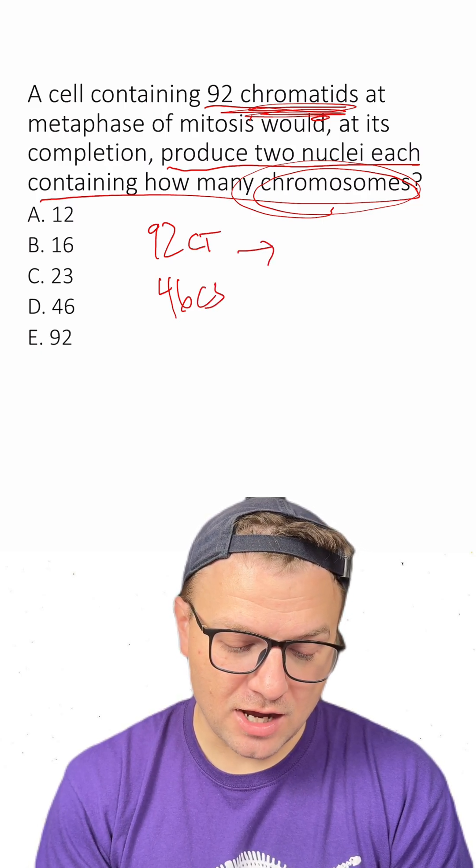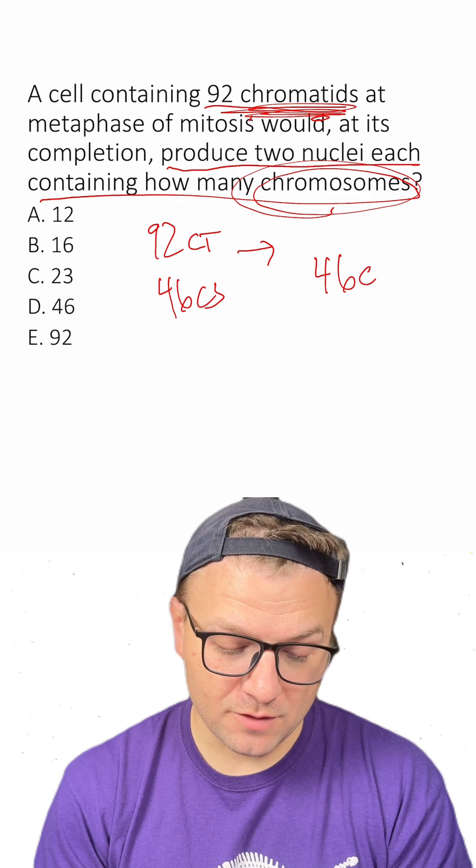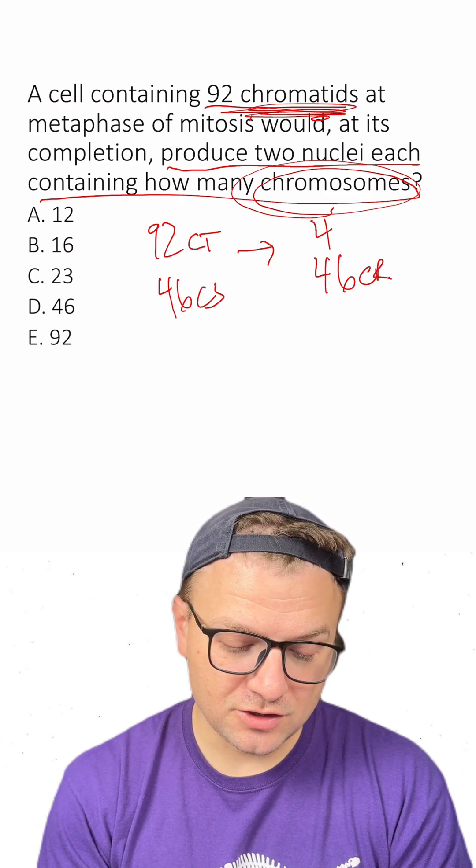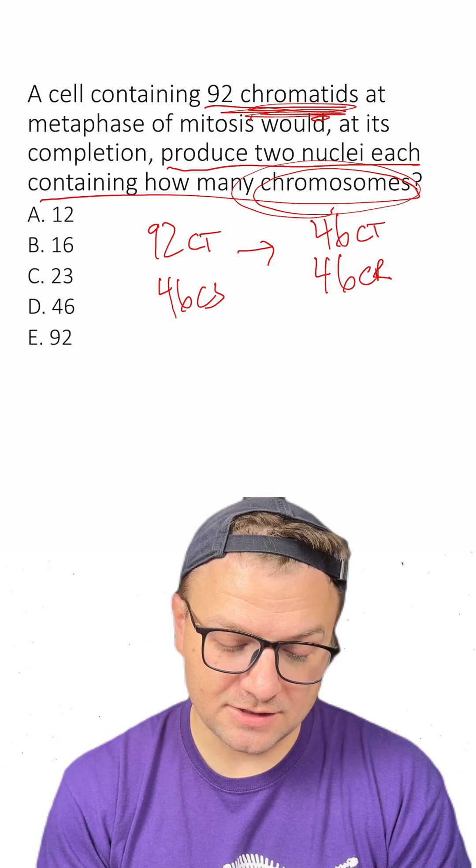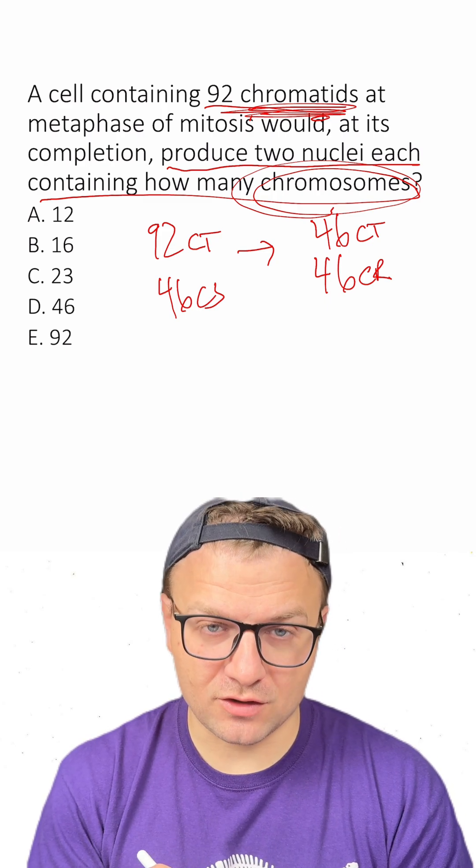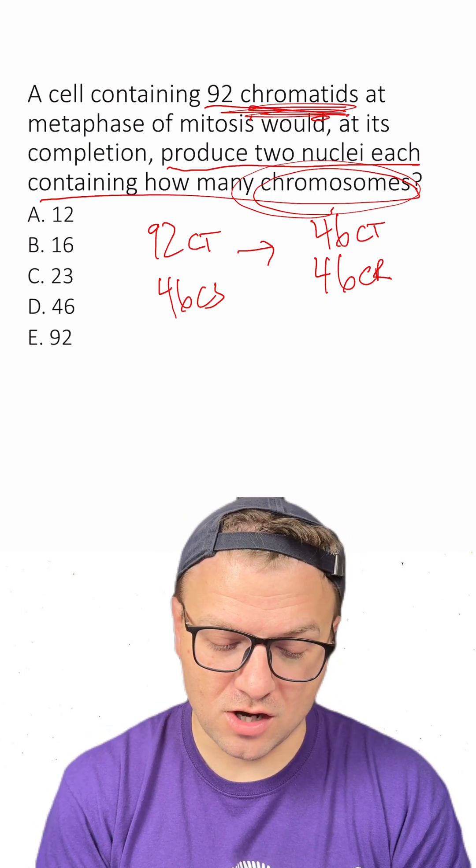Now we're going to have in each cell still 46 chromosomes, but now there's only going to be 46 chromatids. So in this case, this question is kind of confusing because we're going from chromatids to chromosomes.